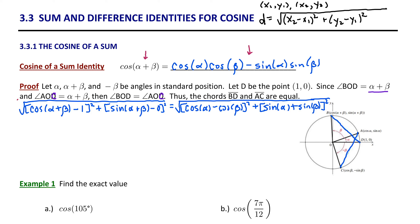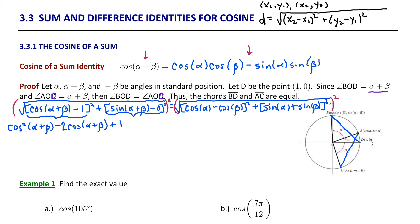We're going to find that when we simplify this equation, it will generate the cosine of a sum identity. Let's begin by clearing the radicals — we can square both sides to eliminate them. Then we carry out FOIL on the left. Cosine(α+β) minus 1 times itself generates cosine²(α+β), the outside and inside terms combine to give minus 2·cosine(α+β), and the last terms give 1. When we square sine(α+β), we simply get sine²(α+β).